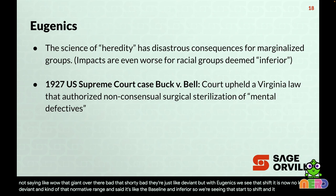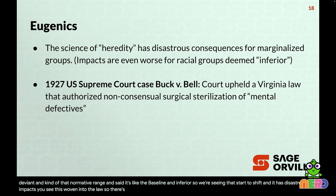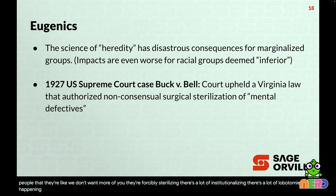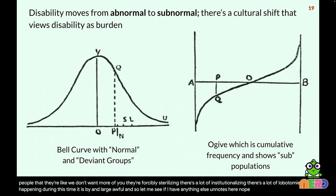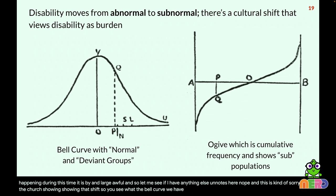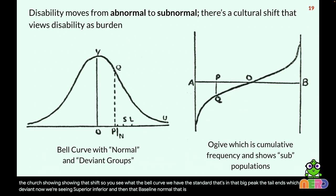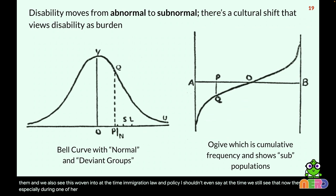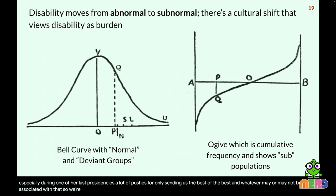You see this woven into law — a huge wave of non-consensual surgical sterilizations, forced institutionalization, and lobotomies. It is by and large awful. You see a chart showing that shift: the bell curve had a standard peak and deviant tail ends; now we're seeing superior, inferior, and that baseline normal. We also see this reflected in immigration law and policy — not just historically, but still today. During one of our last presidencies, there were big pushes for only accepting 'the best of the best,' mirroring these eugenics-era ideas in modern law.